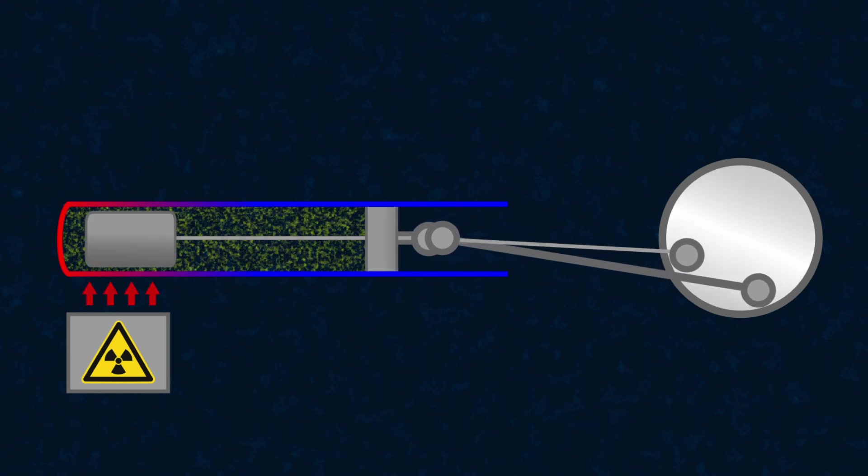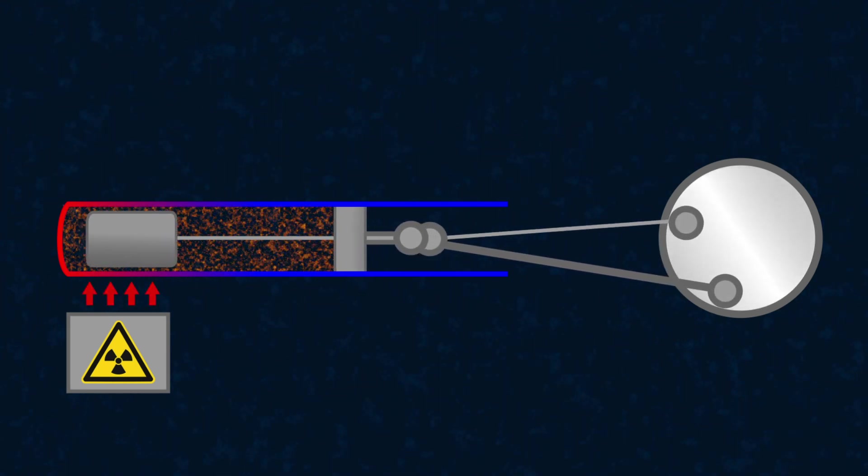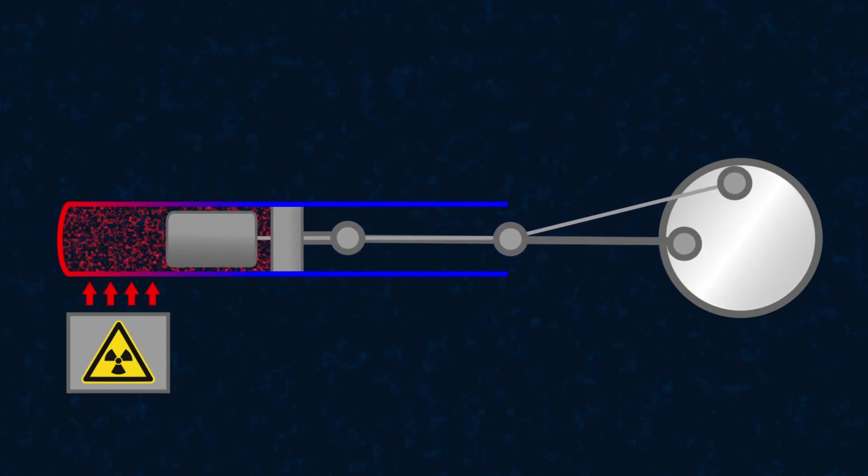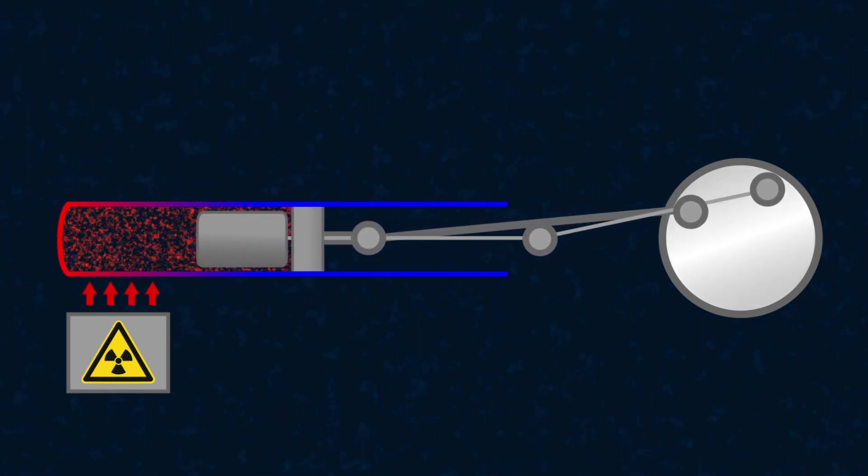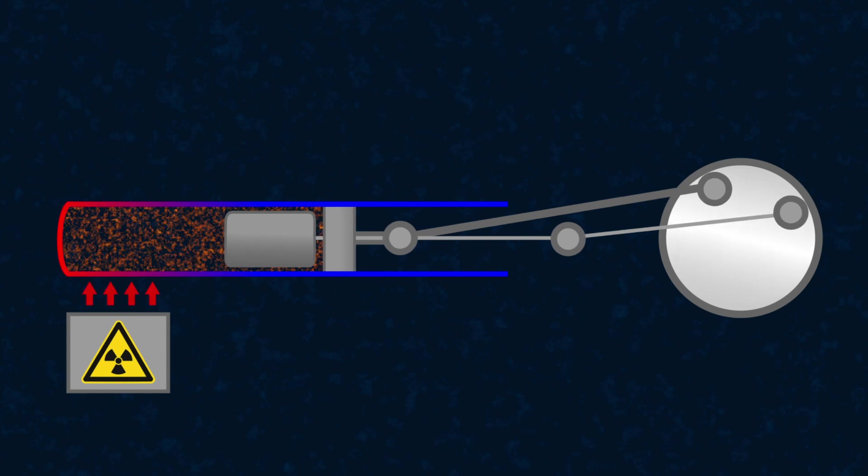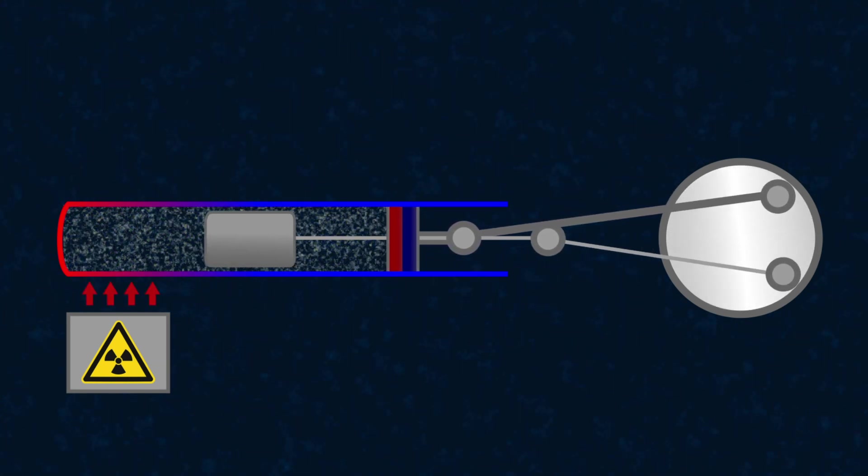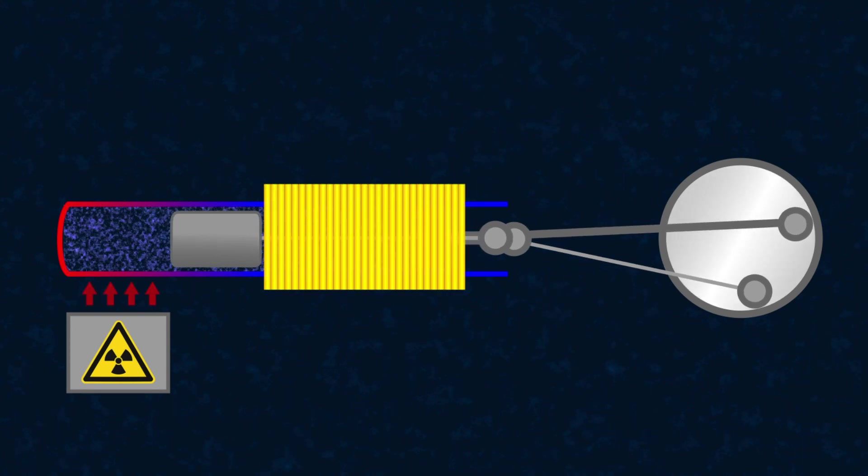Thus, the thermal energy supplied from the radioisotope heater is converted into mechanical energy, which can then be used to obtain what we need—electricity. More precisely, NASA proposes to attach permanent magnets to the working piston and surround the area where it moves with a coil of wire.